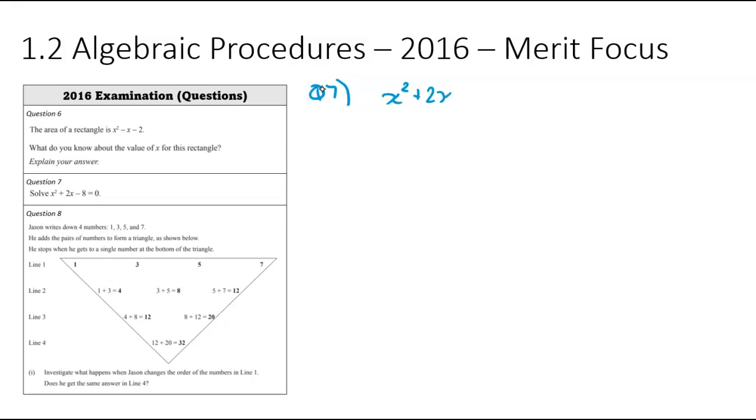x squared plus two x minus eight is equal to zero. I can solve a quadratic when it is equal to zero, which we already have, and when it's factorized, which means I need to go ahead and factorize. So I need to think what adds to positive two and multiplies to negative eight. And hopefully you're thinking the same as me, four and negative two. So I'm going to factorize x plus four x minus two, that's equal to zero.